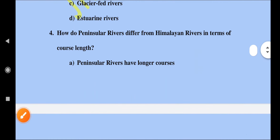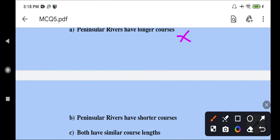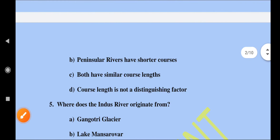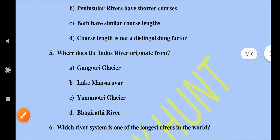Question number four: how do Peninsular rivers differ from Himalayan rivers in terms of course length? Himalayan rivers have longer courses compared to Peninsular rivers. Peninsular rivers have shorter courses — this is correct. Both having similar courses is wrong. So we can say Peninsular rivers have shorter courses; option B is correct.